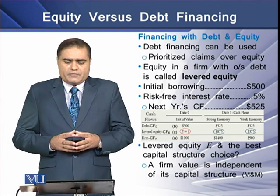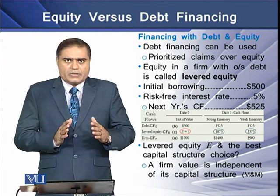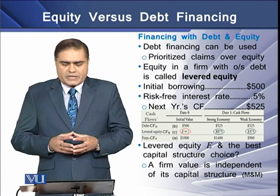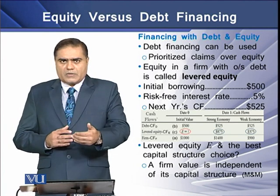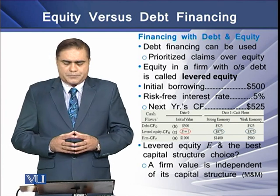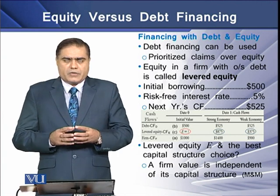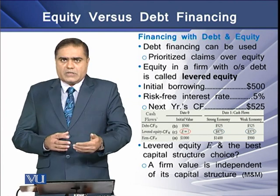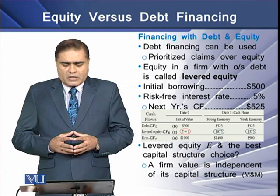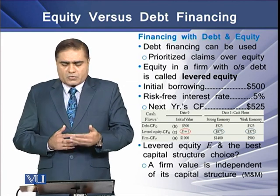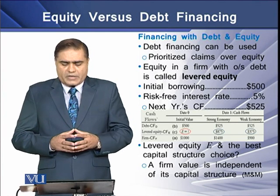What happens if the project is financed with both debt and equity? A firm can use a combination of debt and equity, but in that case, debt holders have a prioritized claim over cash flows ahead of equity holders. Equity in a firm with outstanding debt is termed levered equity. In our example, the firm borrows $500, assumed to be risk-free at 5%. After one year, the cash flows toward the debt holders would be $525, which includes interest at 5%.